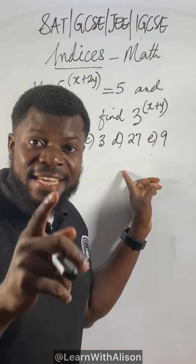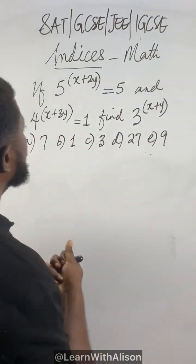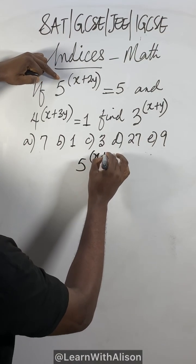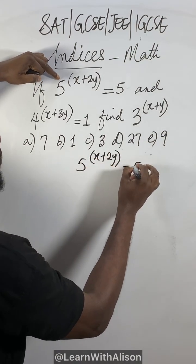To solve this problem in less than three minutes, this is what you need to do. First of all, they say if 5 to the power of x plus 2y equals 5.